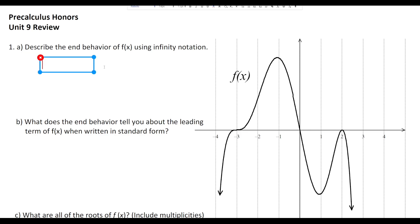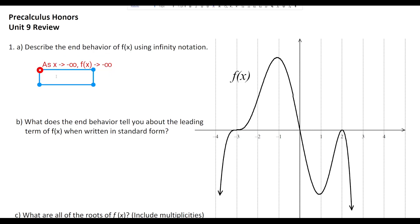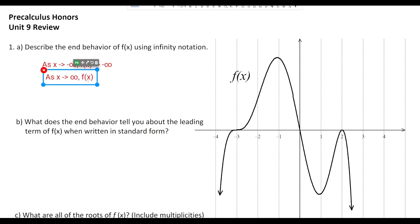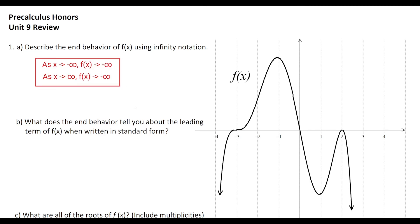Part a asks us to describe the end behavior. Since the graph is going down to the left and down to the right, we say: as x approaches negative infinity, f(x) approaches negative infinity. As x goes to the right, y also goes down, so as x approaches positive infinity, f(x) approaches negative infinity. That's all it's asking.